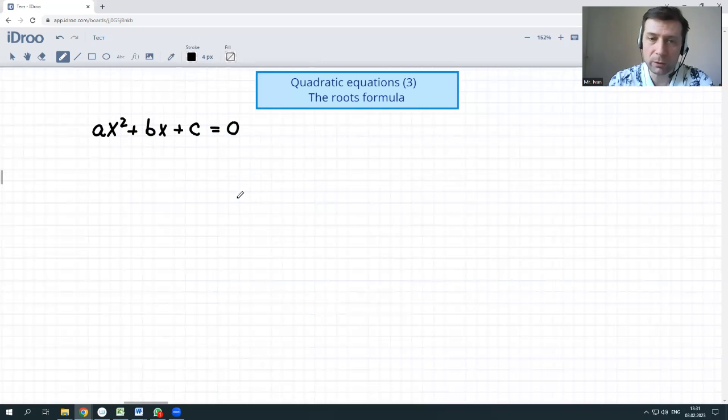So we need to find the roots. In order to find the roots, one of the approaches to be taken is to complete the square. Basically, what do we need? We need first of all to factor out a. We'll get a times x squared plus b over a times x